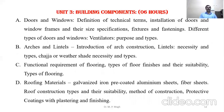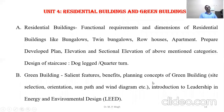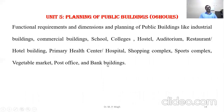Unit 3 is Building Components, which consists of different components such as doors, windows, arches, lintels, building functions, requirements, flooring, and roofing materials. Unit 4 consists of residential building functions, requirements, and dimensions. Unit 5 covers public buildings — their functional requirements and dimensions for planning buildings like hostel, college, auditorium, hall, restaurant, and hospital.